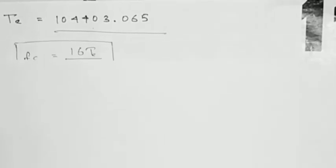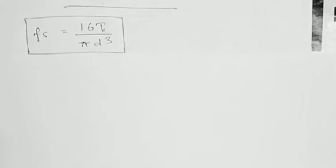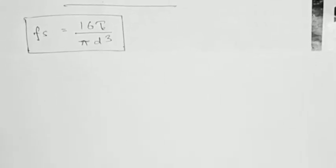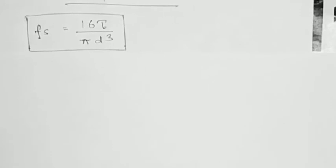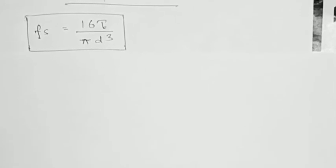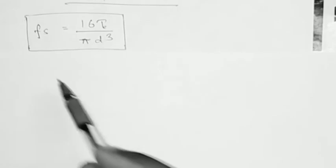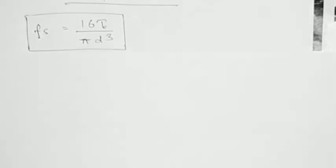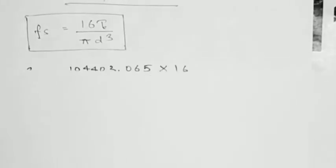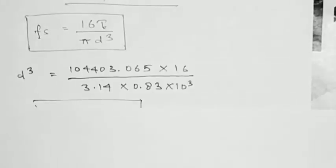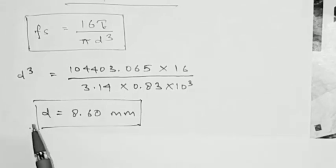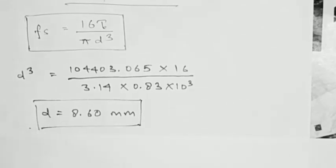After this, we know the formula for shear stress: FS = 16T / (π D³). Using this formula with the known values of T_E and FS, we can calculate the value of D, which comes out to be 8.60 mm.